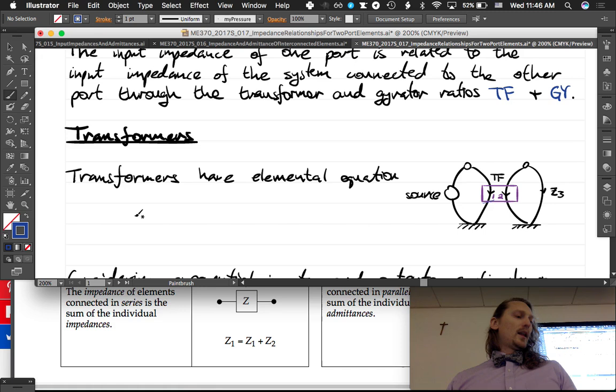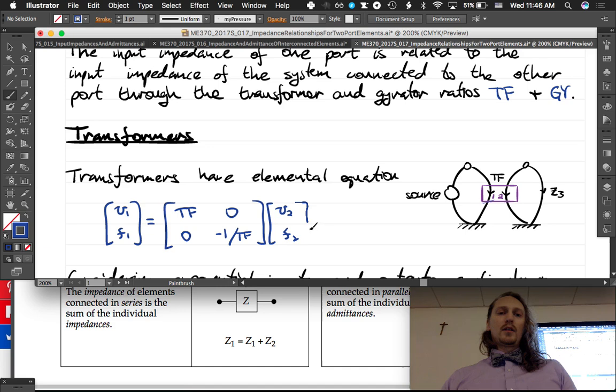So let's write the elemental equation for this. Do you guys remember the elemental equation? v1, f1, the general one where we just have the generalized variables here. So we have the transformer ratio here and then the negative reciprocal of the transformer ratio, and then v2 and f2.